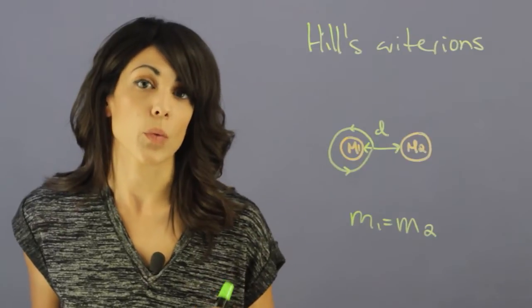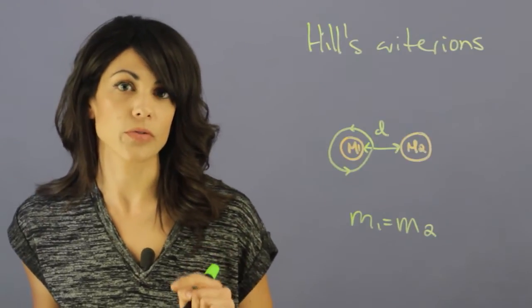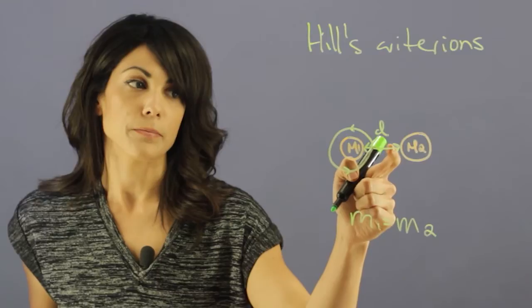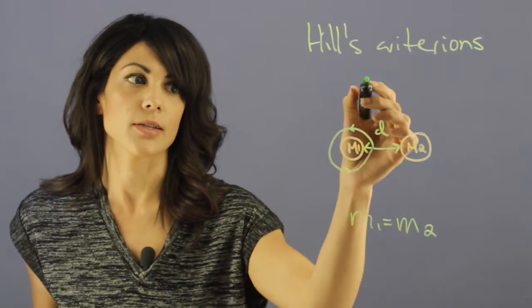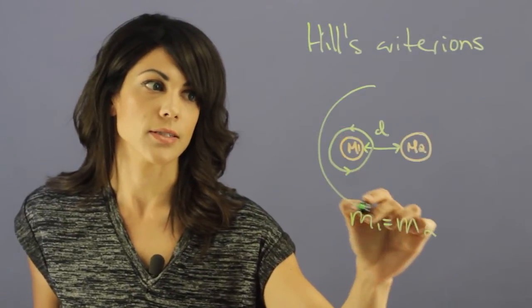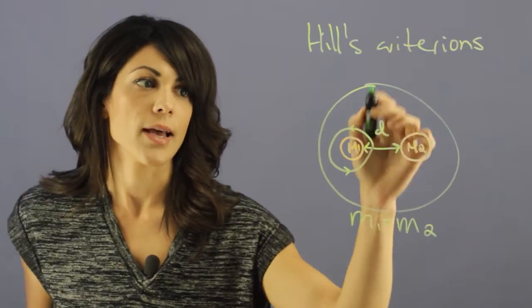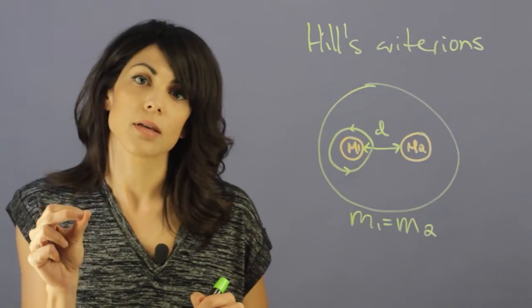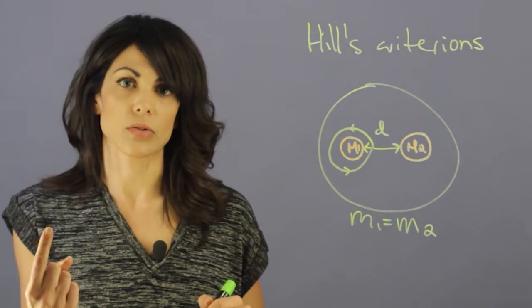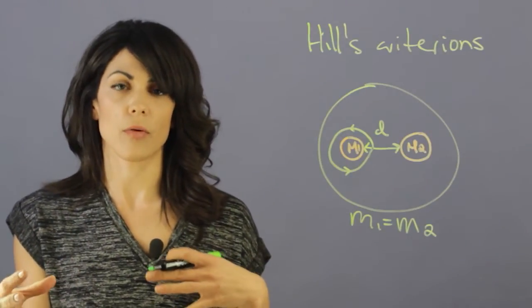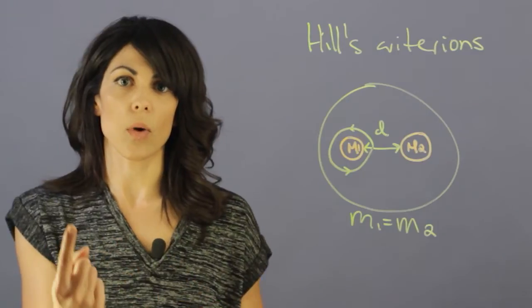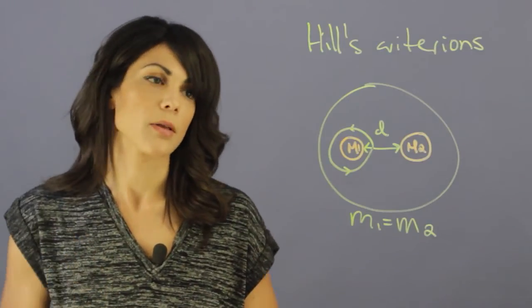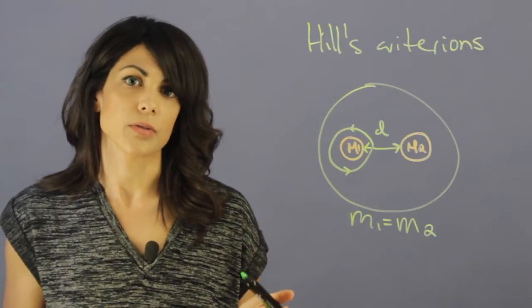Now, if it wants to orbit both stars, the spacing has to be far larger than this distance d. It has to be very large than distance d, because it has to be able to see these two masses as almost as a singular mass. So, if you're far enough away, you kind of just feel one central mass. And this is one of the criterions by Hill's.